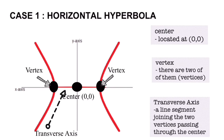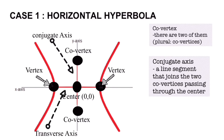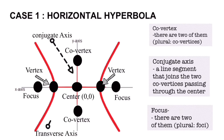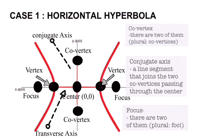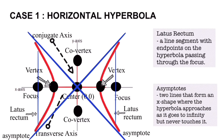Another part is the co-vertex — there are two of them, called co-vertices. The conjugate axis is the line connecting the two co-vertices passing through the center. The next part is the focus — there are two of them, called foci. Remember that the focus is located to the side where the branch of the hyperbola opens. Another part is the latus rectum — this is the line segment with endpoints on the hyperbola that passes through the focus, and there are two of them for each side.